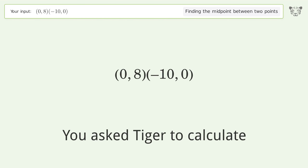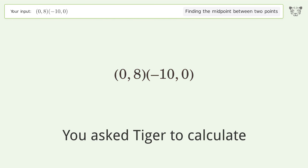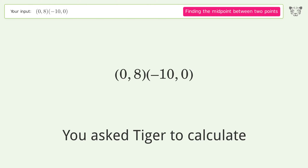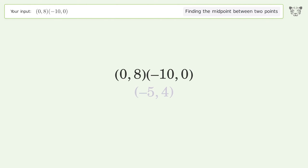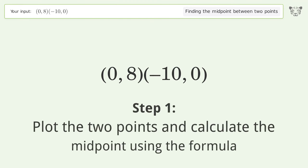You asked Tiger to calculate this — it deals with finding the midpoint between two points. The midpoint between the two points is negative five, comma, four. Let's solve it step by step: plot the two points and calculate the midpoint using the formula.